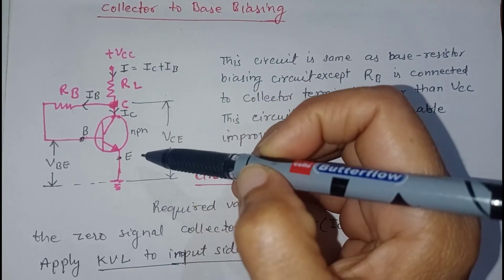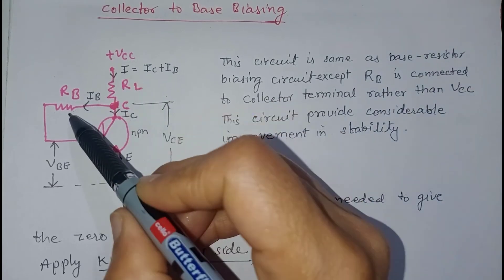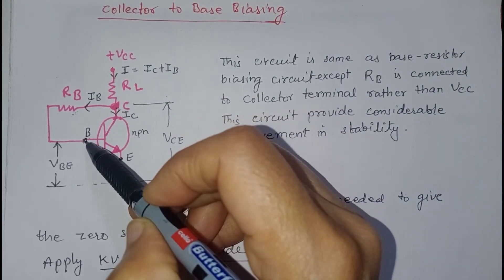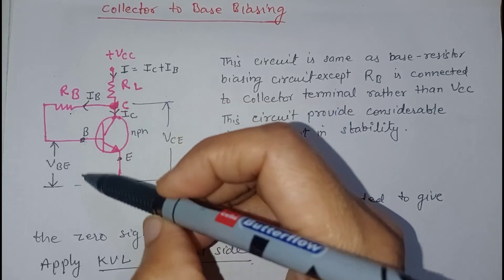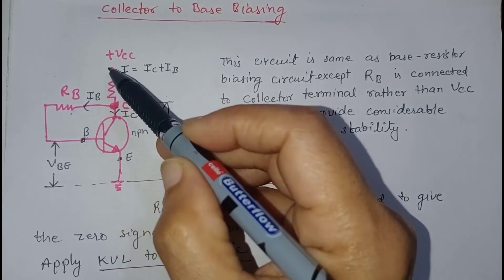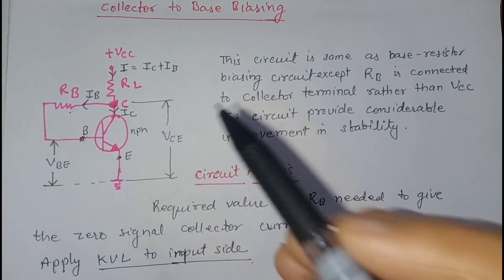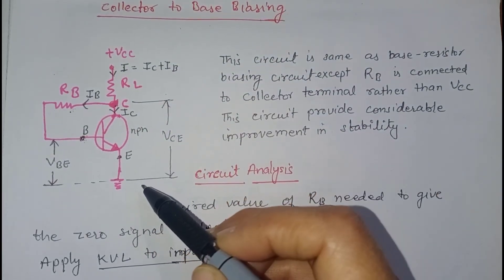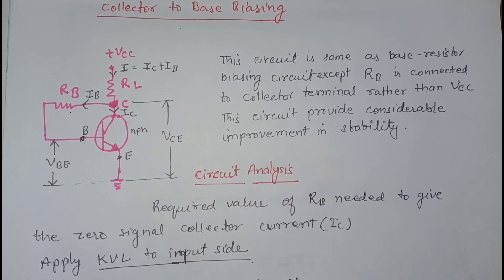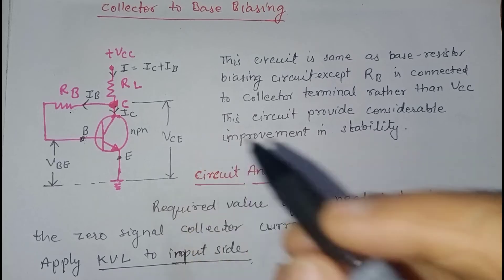Here is the circuit diagram of collector-to-base biasing. In this method, RB is connected between the collector and the base terminal, unlike the fixed resistor biasing method in which RB is connected between the base and VCC. This method provides a considerable improvement in stability of the operating point, so this method is better than fixed resistor biasing.